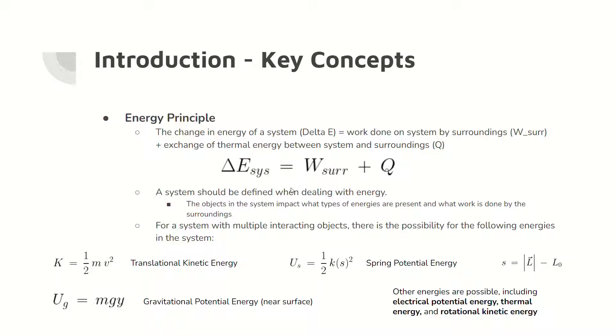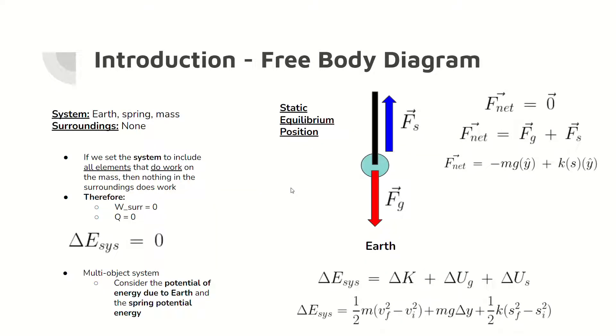The energies shown in mathematical equations are present in this lab. In this experiment, the system is the Earth, spring, and mass. The surroundings are nothing that does work on the system. Therefore, the change in energy equals zero. Because the system has multiple objects, potential energies are considered.